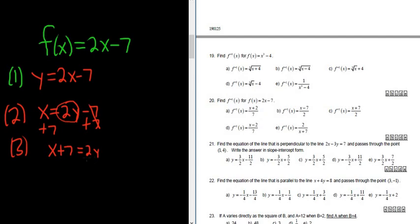So we end up with x plus 7 equals 2y. And to finish solving for y we'll just divide by 2. Divide by 2, divide by 2. So we end up with y equals x plus 7 all divided by 2.